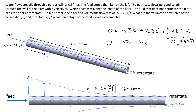Being careful with units, the volumetric flow rate of the permeate is equal to 4.8 liters per second. The volumetric flow rate of the retentate equals the volumetric flow rate of the feed minus the volumetric flow rate of the permeate, which gives 15.2 liters per second. Finally, the percentage of the feed leaving as permeate is the ratio 4.8 liters per second divided by 20 liters per second, which equals 24 percent.